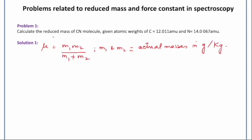We can directly substitute the values of the mass of carbon and nitrogen in the CN molecule. But the problem that is coming in front of us is the unit of the masses. It is given in amu and in the formula it should be either in grams or kilograms. So our first priority is to convert these masses into grams or kilograms.